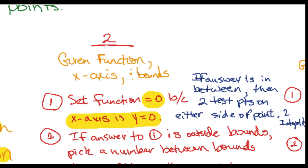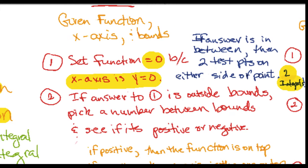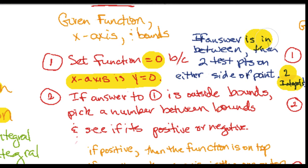Reason being, we can have the region we're looking for be above the x-axis on one side of the intersection point and below the x-axis. If that's the case, you're going to have two integrals because it's below and above on either side. So if the answer is not in between the two test points, then if it's outside the two bounds, then we don't have to worry about that weird scenario.